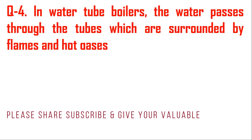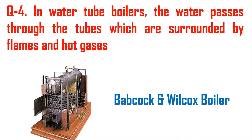Question number four: in water tube boilers, water passes through the tubes which are surrounded by flames and hot gases — this is called a water tube boiler. Babcock and Wilcox boiler is an example. Combustion takes place on the bottom side of the water tubes, and flue gases supply heat to the inclined tubes containing water, generating steam. Steam is collected in the drum on the top side, while water remains at the bottom due to its higher density. All mountings are attached on the top side.